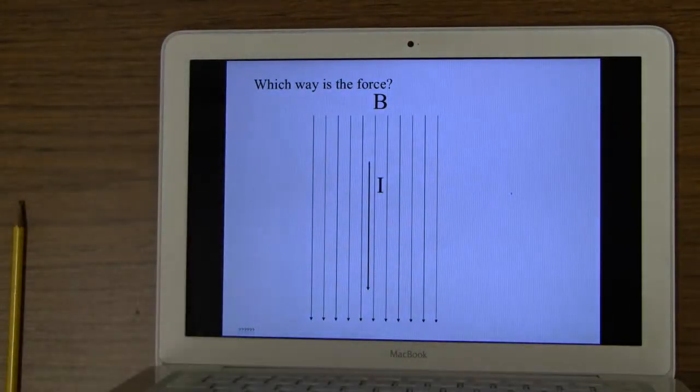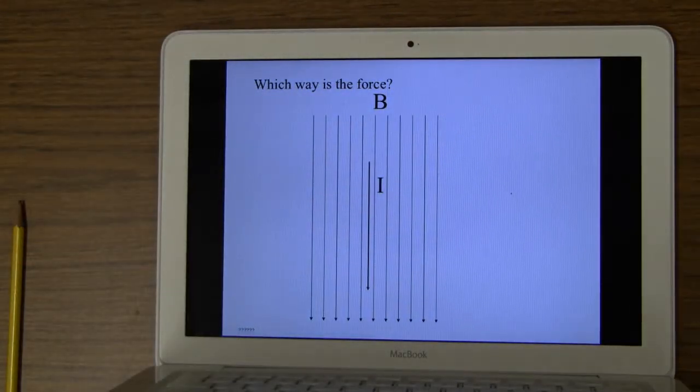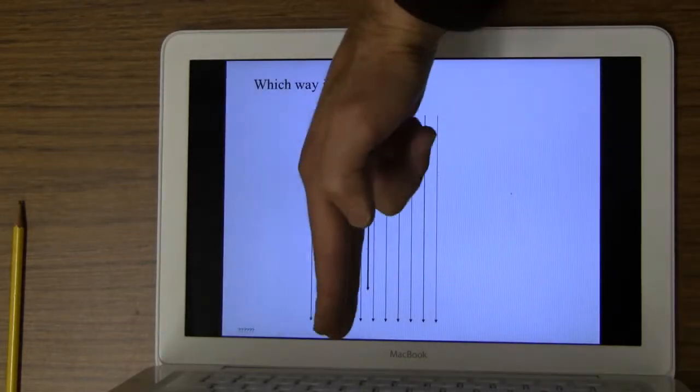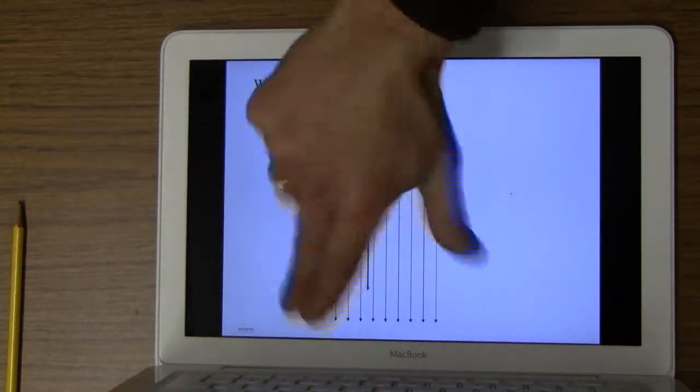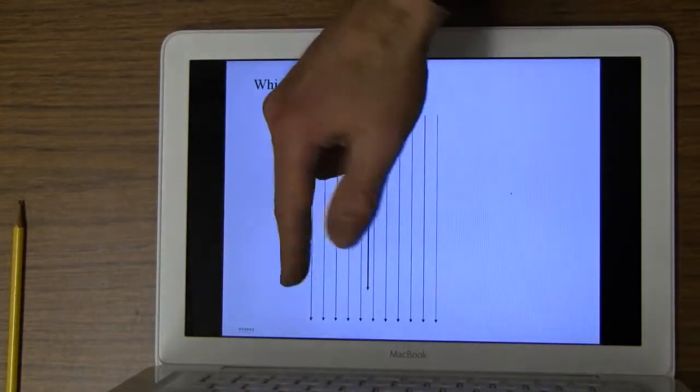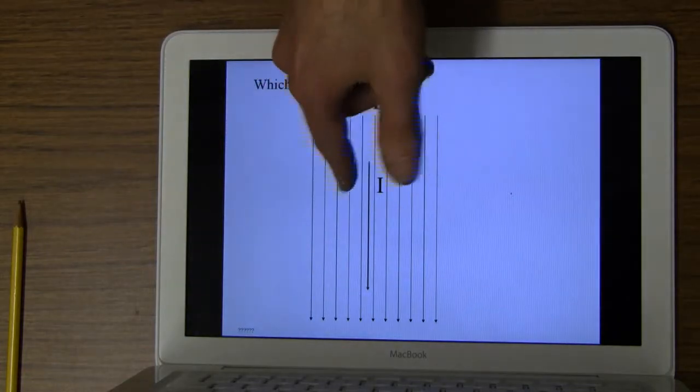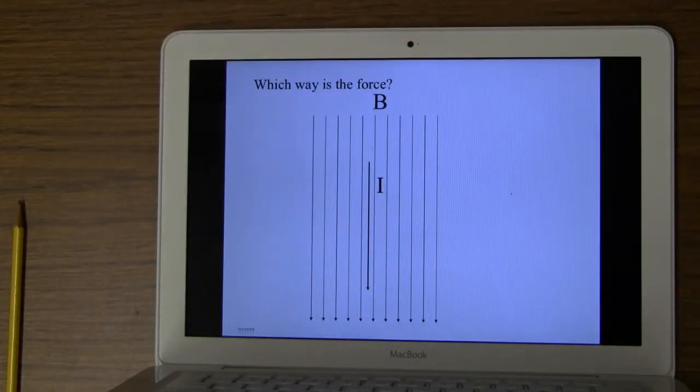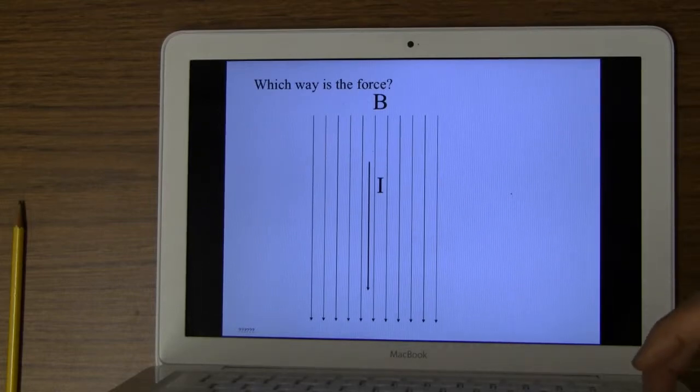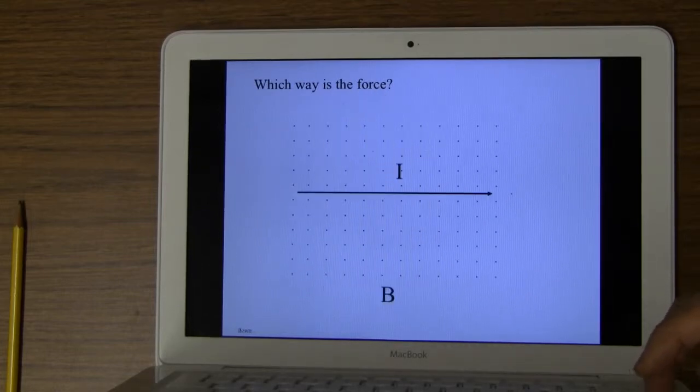Okay, now I love this one. So, current is that way, magnetic field is that way, it's undefined. There's no direction, it doesn't matter because the sine of the angle between them is zero, sine of zero is zero, so it's zero force in an undefined direction.